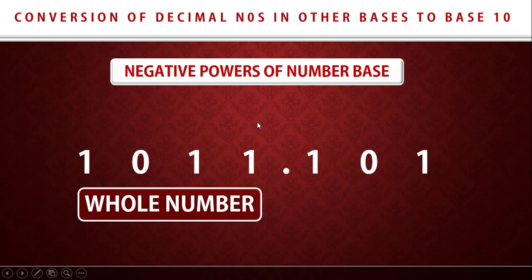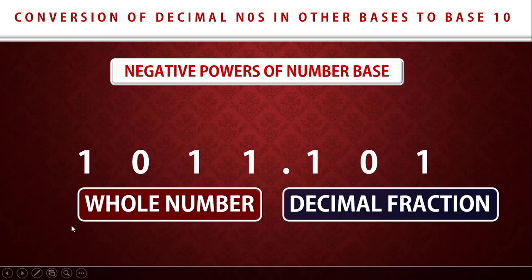After the decimal point, the numbers that appear to the right hand side are the decimal fraction. For the whole number part, the last digit is the one we start from. The powers move from that position to the left hand side as positive powers, so the last digit will be power zero, then one, then two, then three. All these are positive powers.